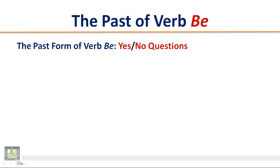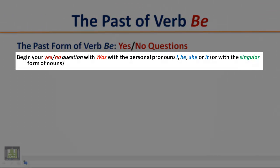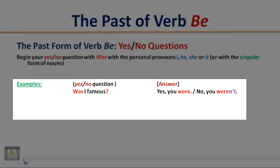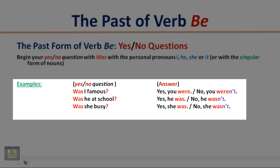The past form of verb B — yes/no questions. Begin your yes/no question with 'was' with the personal pronouns I, he, she, or it, or with a singular form of nouns. Examples: Was I famous? Yes, you were. / No, you weren't. Was he at school? Yes, he was. / No, he wasn't. Was she busy? Yes, she was. / No, she wasn't. Was it cold? Yes, it was. / No, it wasn't.